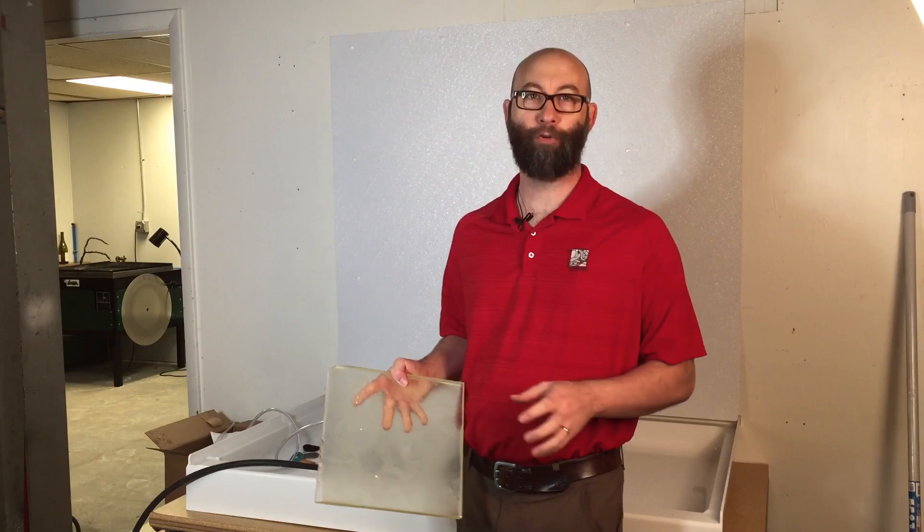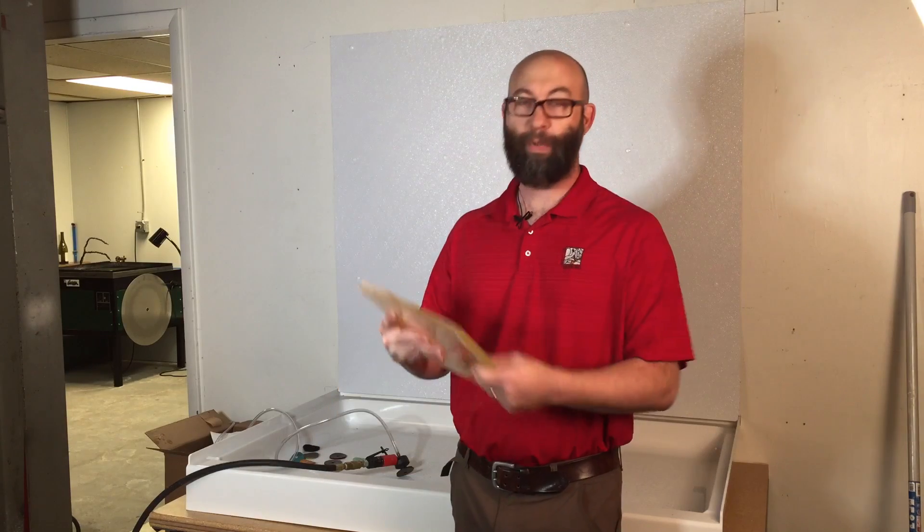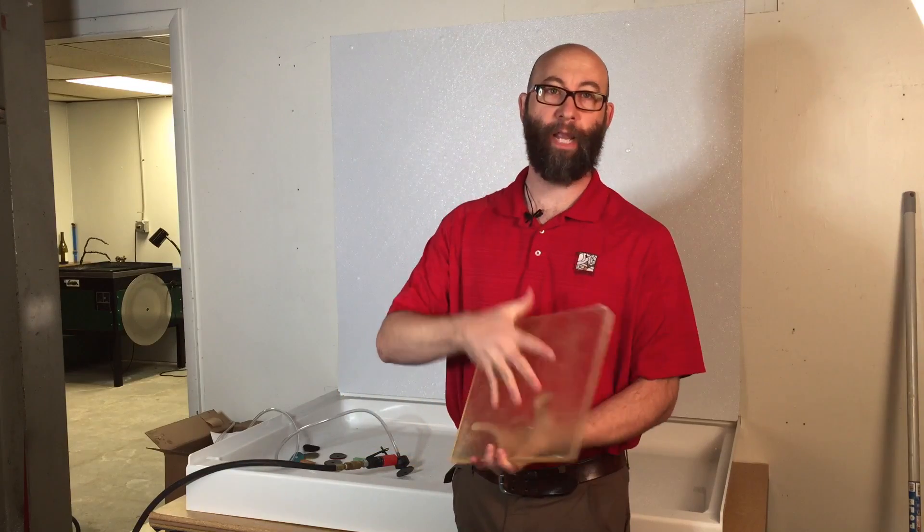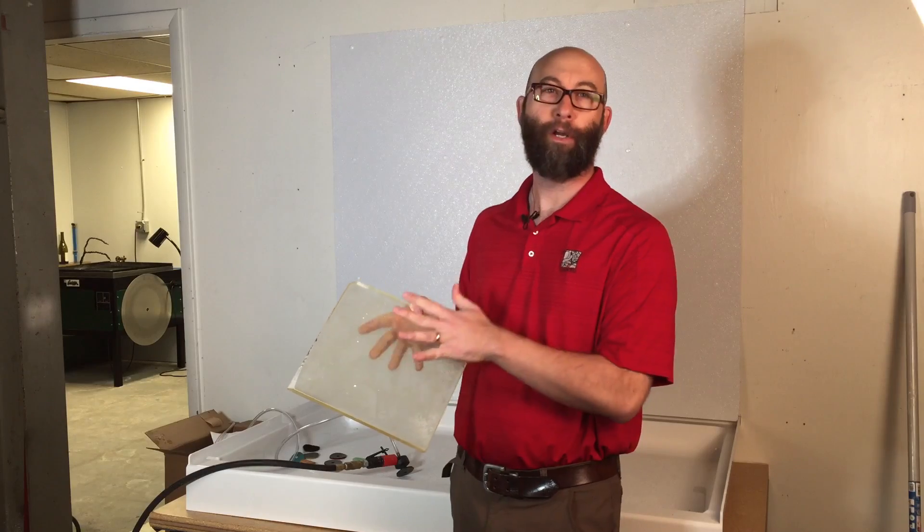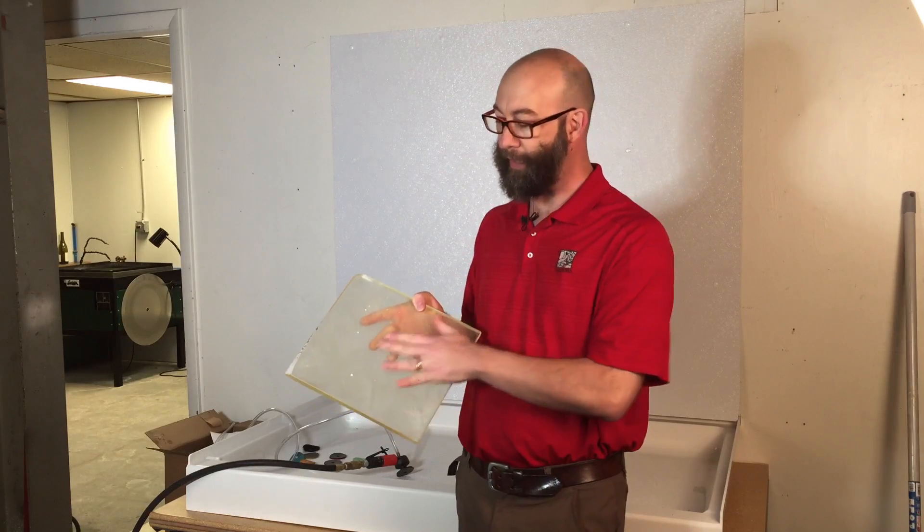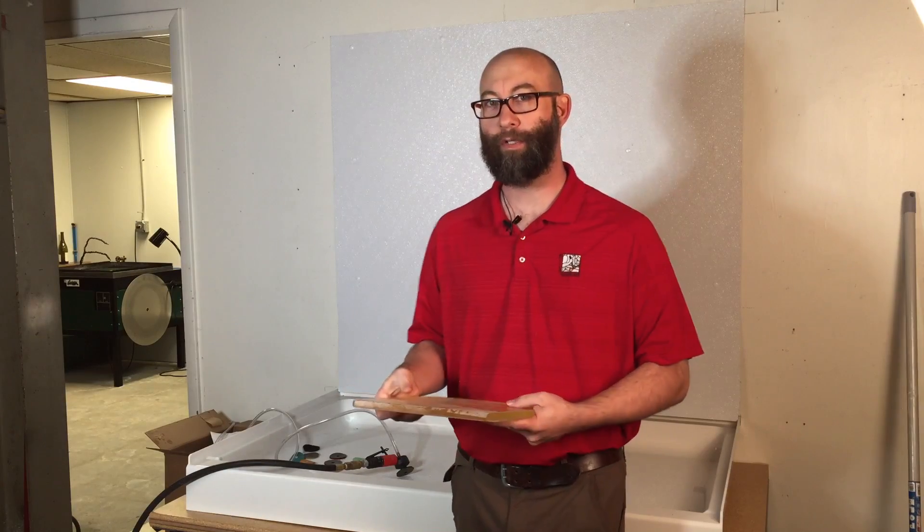We're going to take a look at some of our right-angle grinders right now, and I've got a piece of cast lead crystal glass. This is from our F2 lead crystal. We've got a nice surface on this side from the casting, but we've got a lot of kiln shelf texture on this side of the glass. I want to try and take some of that off and clean it up and make it look a little more presentable. I'm going to use some of our right-angle grinder tools to do that.